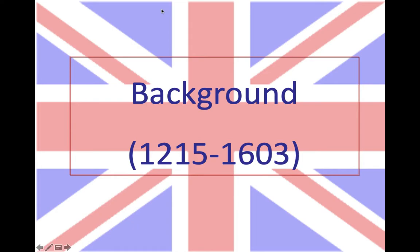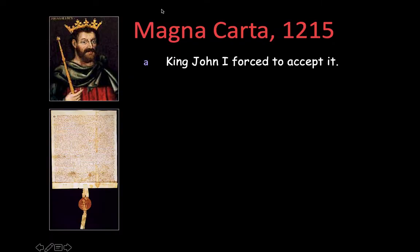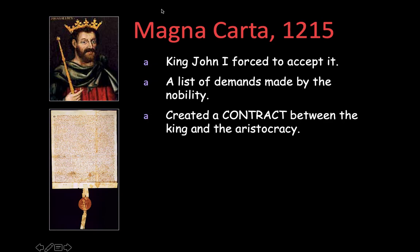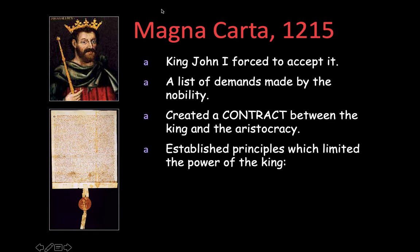The background for this actually goes back to 1215 with an important document called the Magna Carta. The nobles will force the king to sign this document — also called the Great Charter — and it creates a contract between the king and the nobles, or aristocracy. Essentially, what the Magna Carta does is limit the power of the kings, and that's why this is so important.